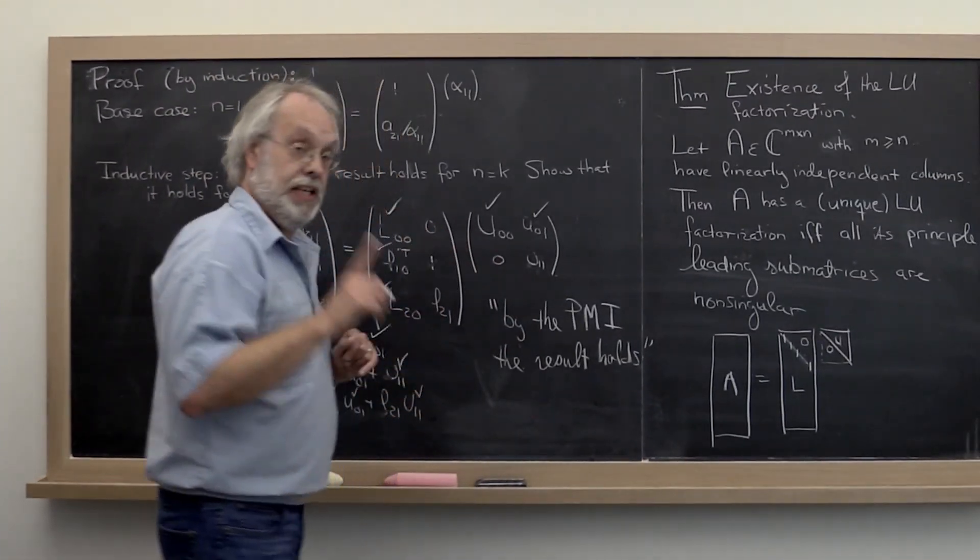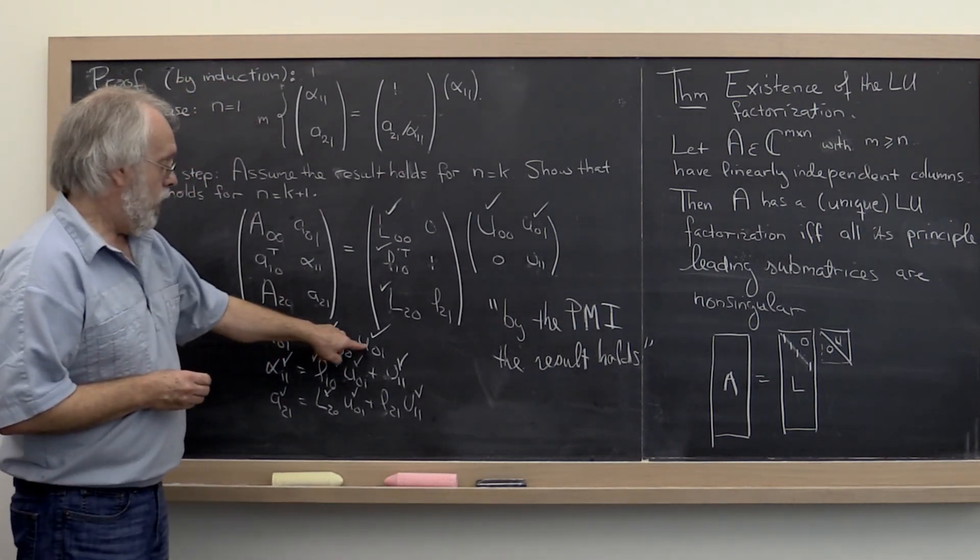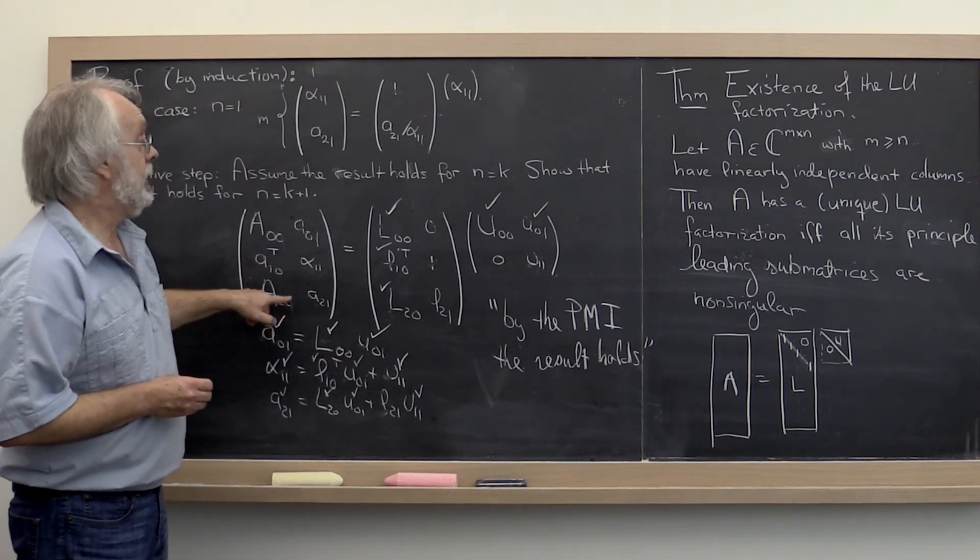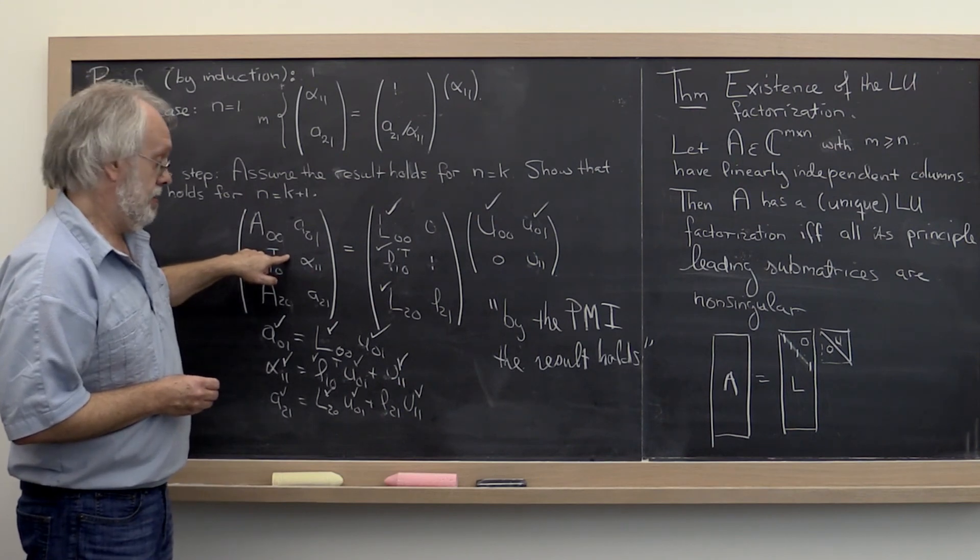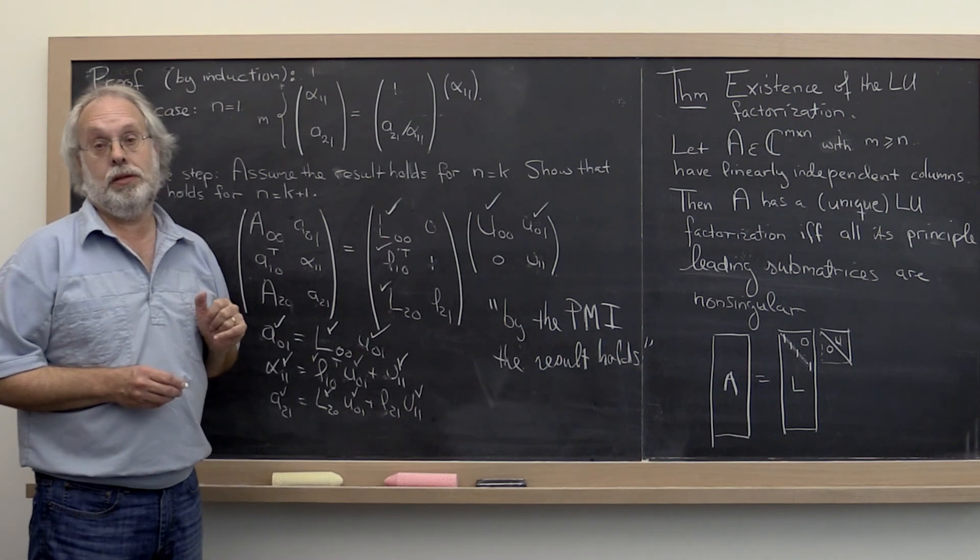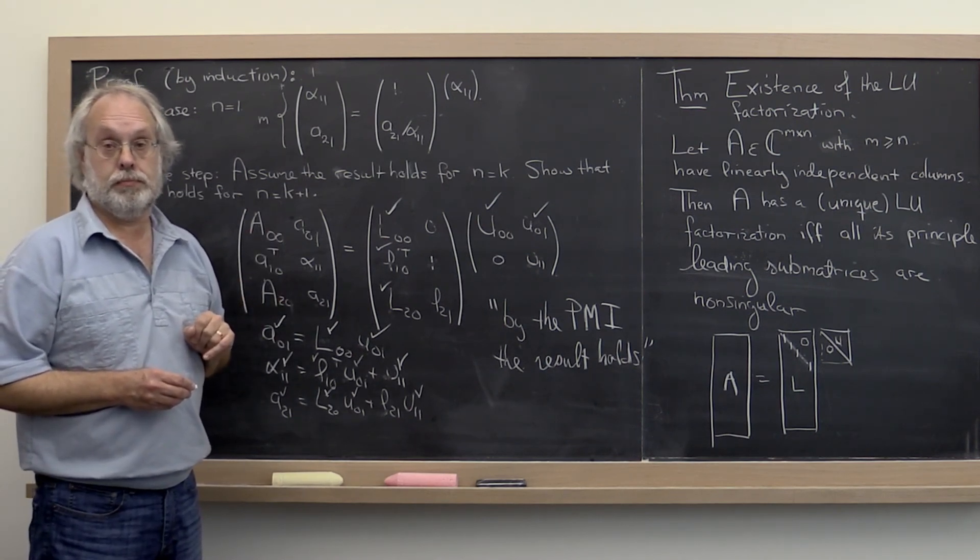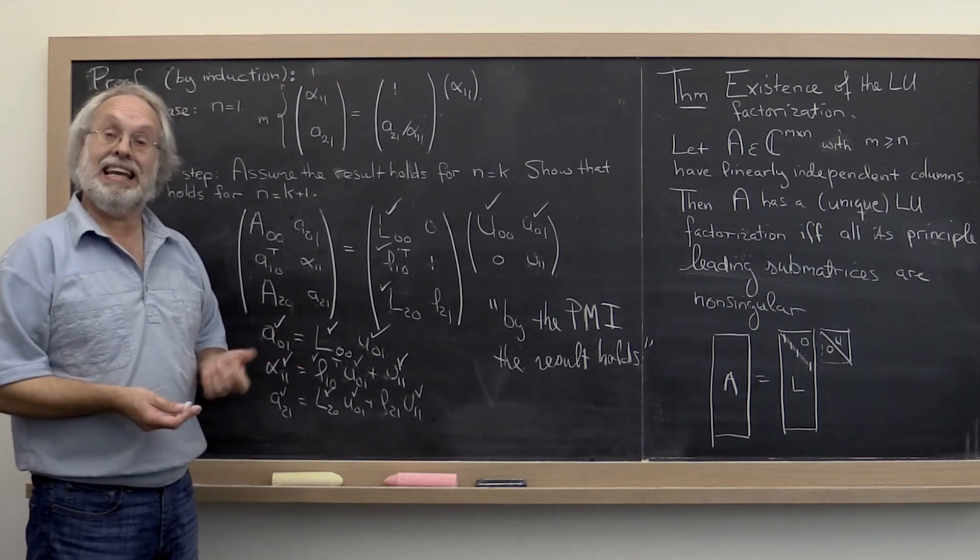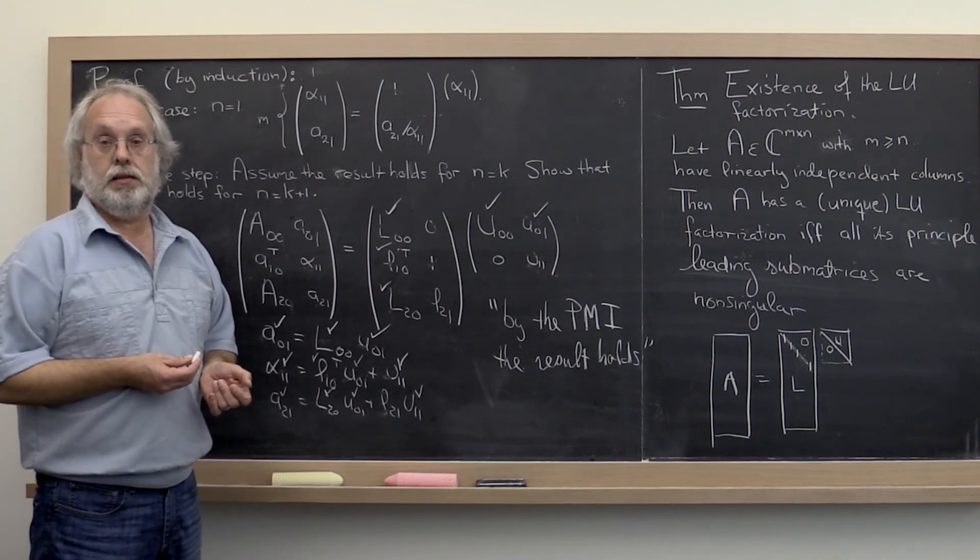Now, here's the interesting thing. We've actually given an algorithm for computing the LU factorization of matrix A that is different than the algorithm that you learned in the last unit. And that particular algorithm is known as the left-looking algorithm. And it's summarized in this unit.